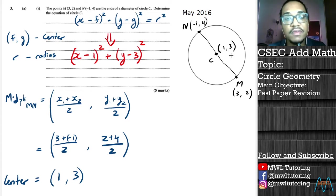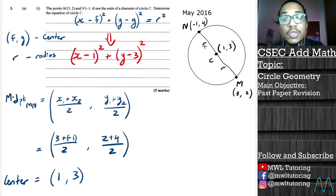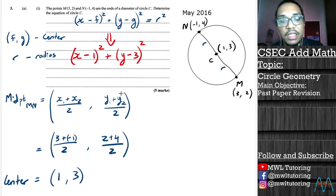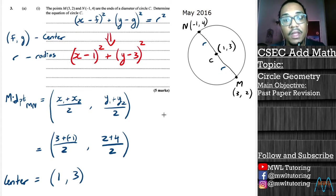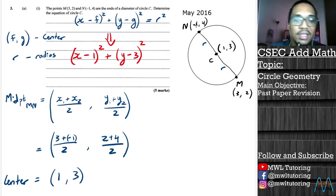We need to find the radius of the circle. The radius is just the length from the center to the circumference — so this is a radius here, and this is a radius here. All we need to do is find the length of one of these radii and we have the last part of the equation. There's a formula from normal math for the length of a line. I'll use the center and point M, just because M has two positive values — let's stay away from the negative number as it usually leads to a little trouble.